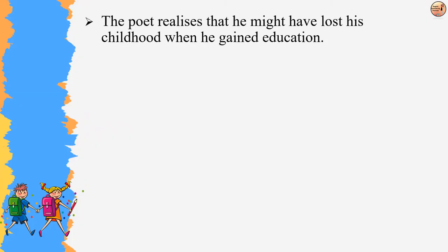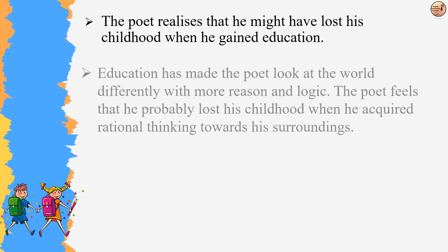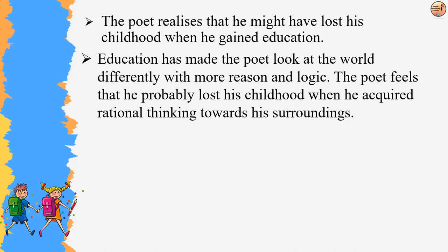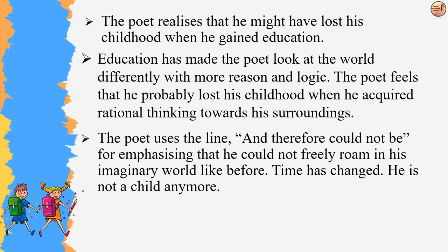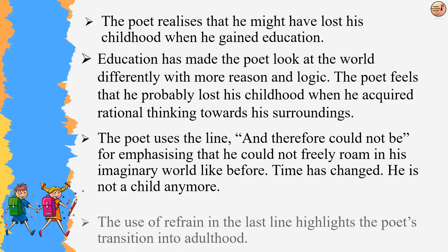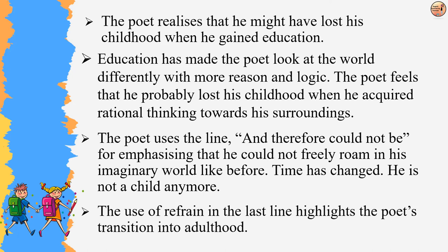The poet feels that he might have lost his childhood when he gained education, which made him look at the world differently with more reason and logic. He probably lost his childhood when he acquired rational thinking towards his surroundings. The line 'and therefore could not be' emphasizes that he could no longer freely roam in his imaginary world. The use of refrain in the last line highlights the poet's transition into adulthood.